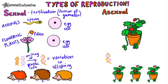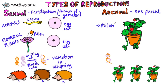This leads to variation, or variety, in the offspring. Can you spot some differences in these three little hedgehogs? Now let's look at asexual reproduction. Asexual reproduction involves one parent only.